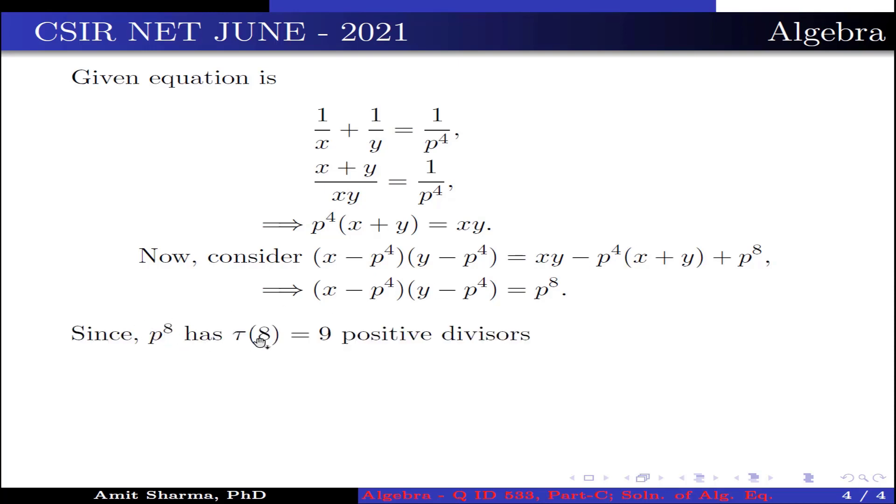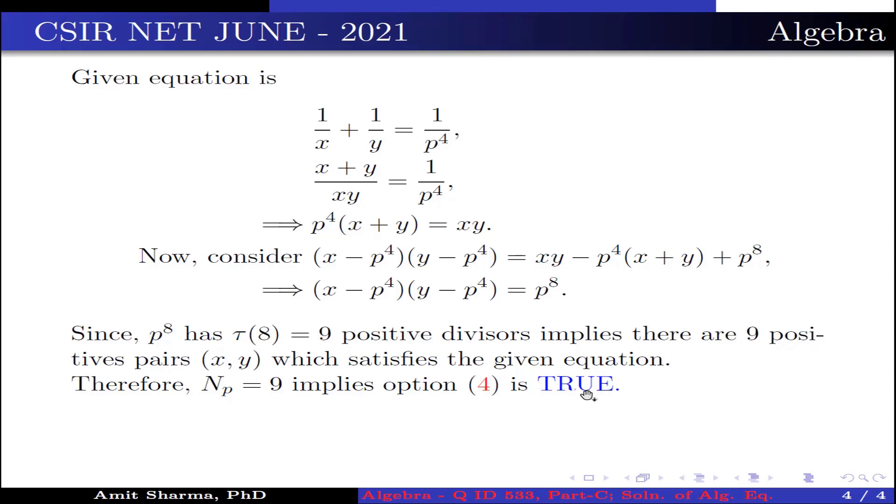Since P^8 has τ(8) = 9 positive divisors, this implies there are 9 positive pairs (x, y) which satisfy the given equation. Therefore, NP = 9 implies option 4 is true. Hence, option 4 is true.